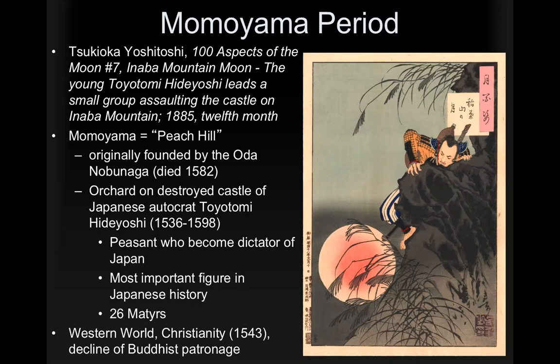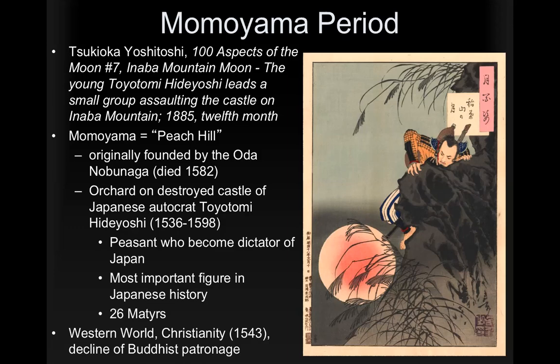There was a decline of Buddhist patronage during this time, for some of the same reasons we saw in China. A lot of daimyo saw the Buddhist monasteries as having too much power — a kind of bureaucracy that the shogun couldn't control.